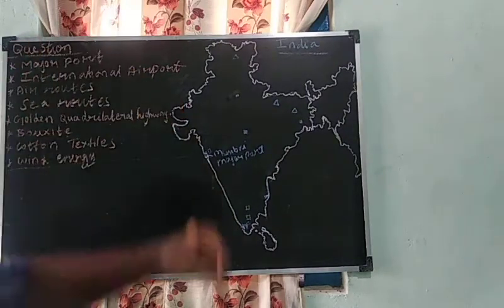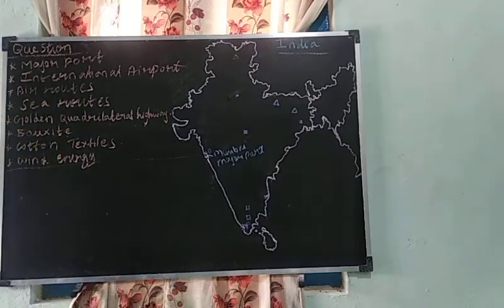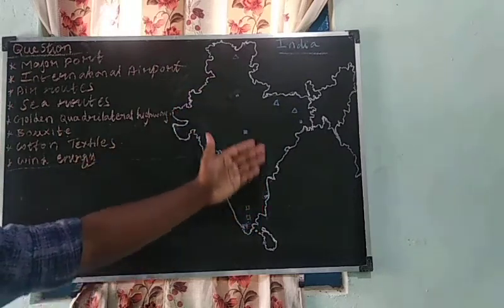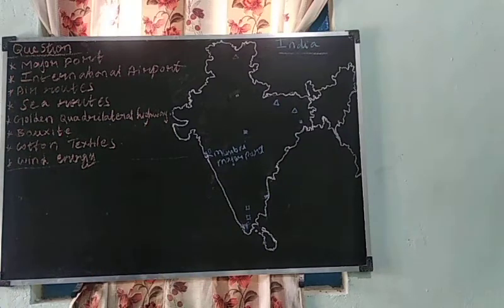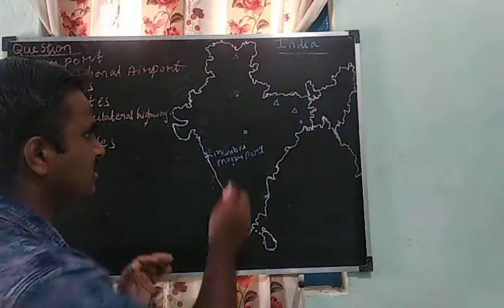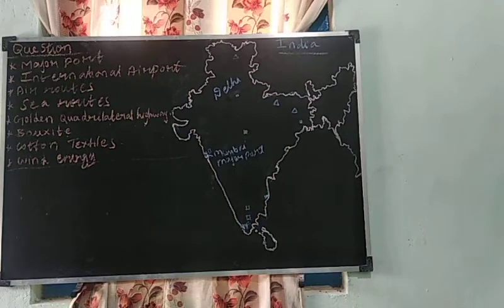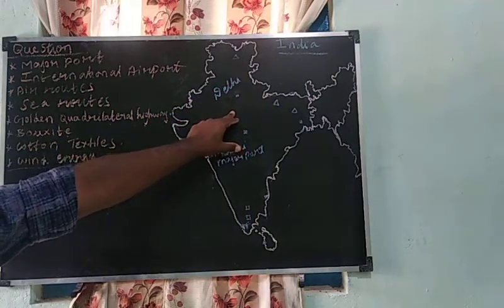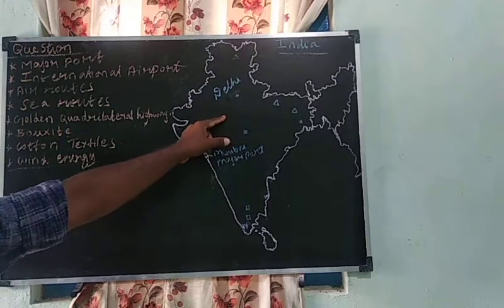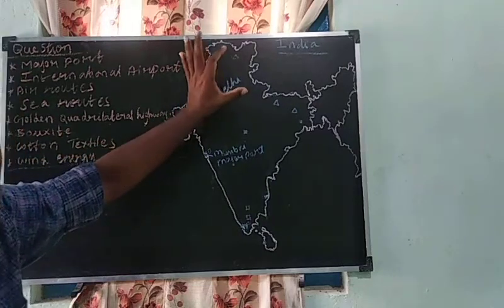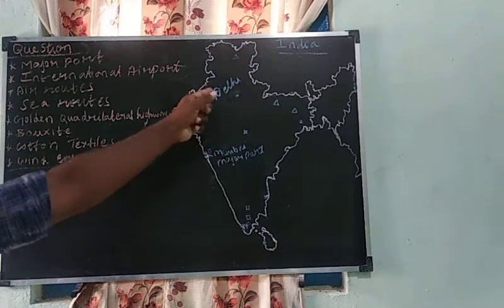Next one is the international airport. Airways are another important mode of transport. International airports in India include Delhi, Chennai, Kolkata, Mumbai, and Thiruvananthapuram. I marked Delhi, which is one of the important international airports and the capital of our country, New Delhi.